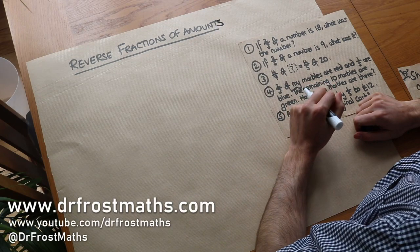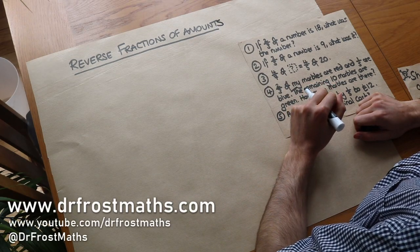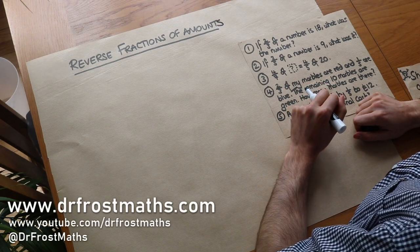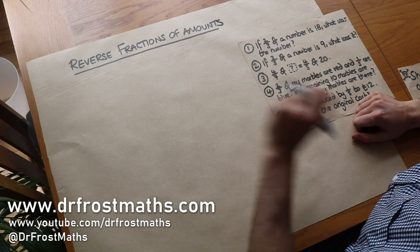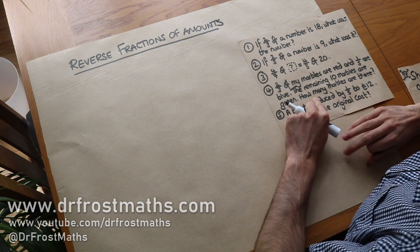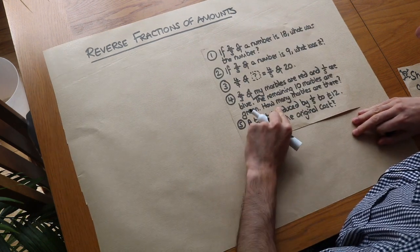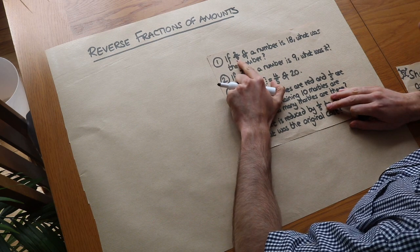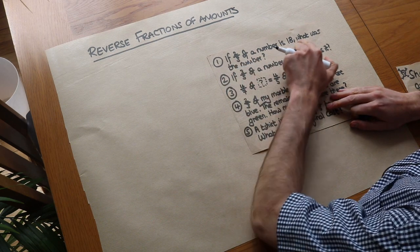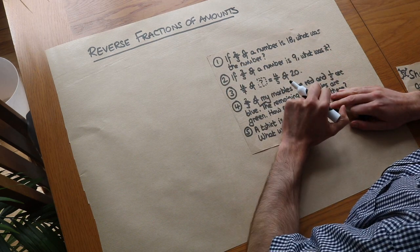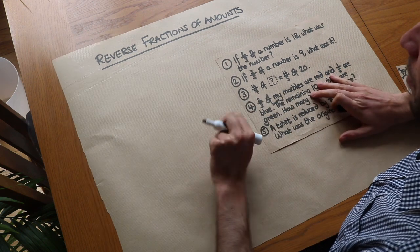Hello and welcome to this video on reverse fractions of amounts. What I mean by that is finding the value before a fraction of something was taken. So let's take this first question for example: if two-thirds of a number is 18, then what was the original number?